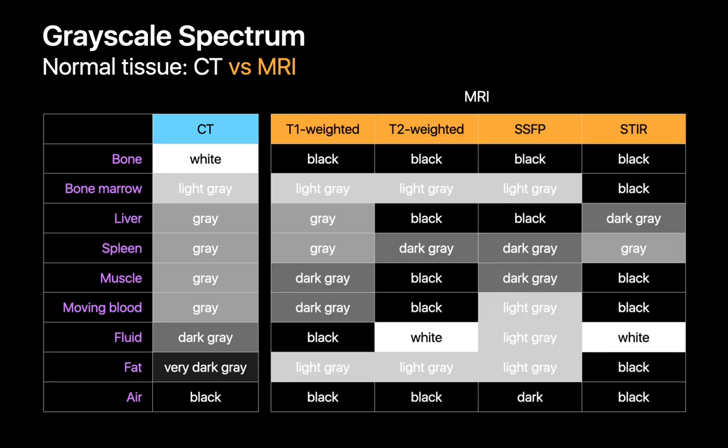Recognizing abnormalities on MRI, however, can be a lot trickier. Where different structures normally fall along the grayscale spectrum is not always as intuitive as it is on CT, and these patterns can be different on one MR sequence versus another.